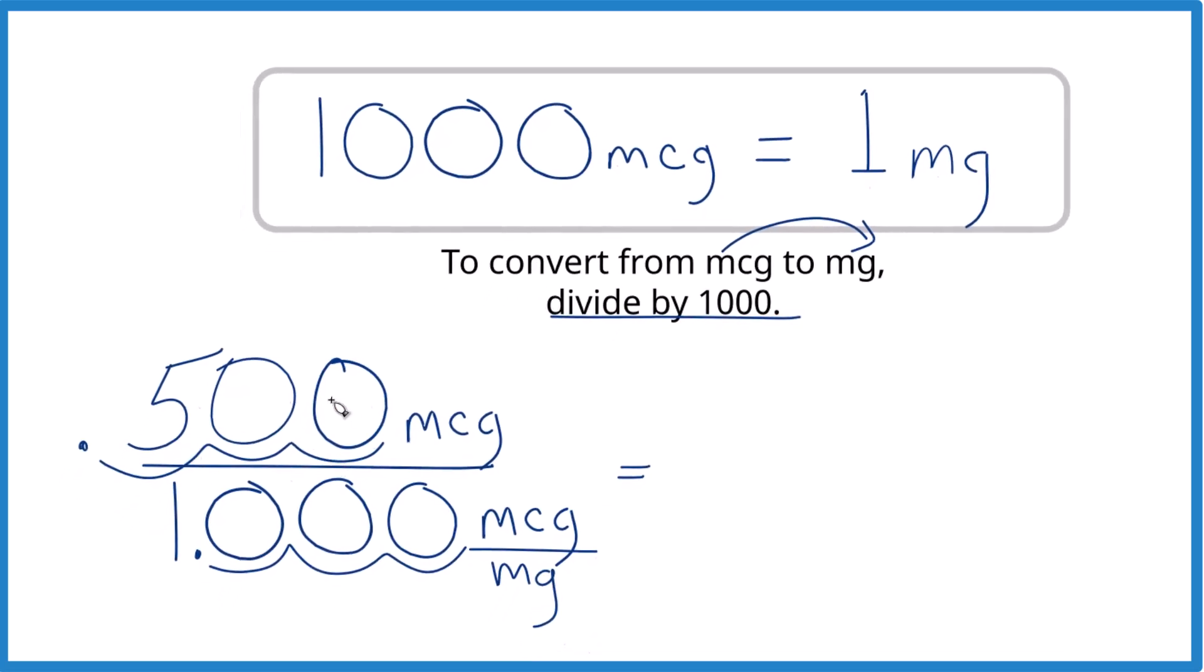And it turns out 500 MCG equals 0.5, and you can leave these last two zeros off, and we're going to call that MG.